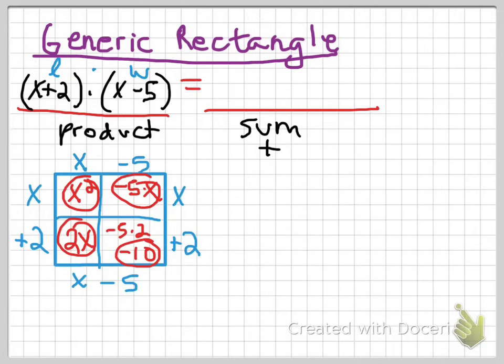And those are going to make up my sum. That's the area of the rectangle. I'll write it over here. We have an x squared, a minus 5x, plus we have 2x, and we have a minus 10. Technically, this is my answer. This is my sum. And I could stop there,